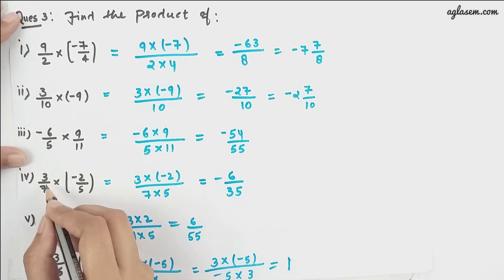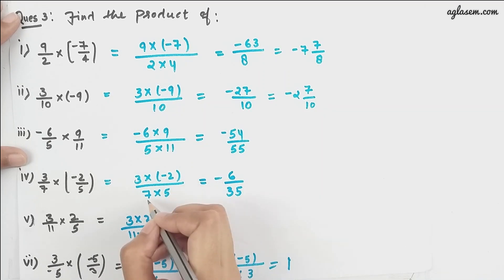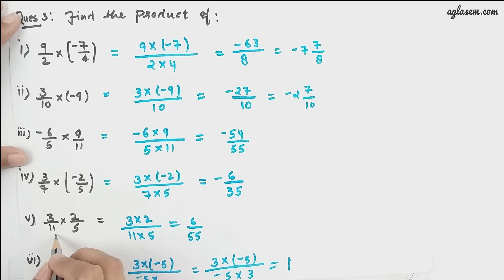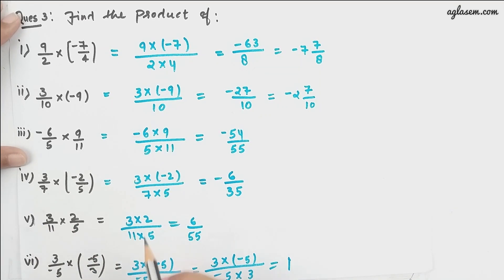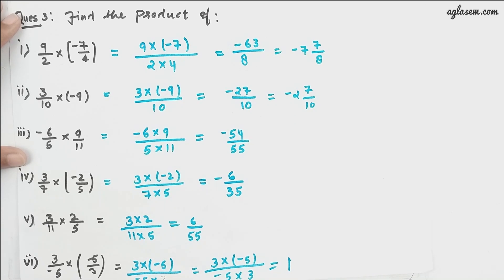Moving further, 3/7 × (-2/5): 3 × 2 = 6, minus sign remains, 7 × 5 = 35, giving -6/35. Next, 3/11 × 2/5: 3 × 2 = 6, and 11 × 5 = 55, giving 6/55. Finally, 3/(-5) × (-5/3): 5 × 3 = 15 in the numerator and 5 × 3 = 15 in the denominator, and the two minus signs cancel out, giving us an answer of 1.